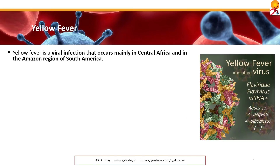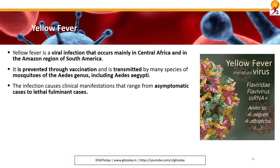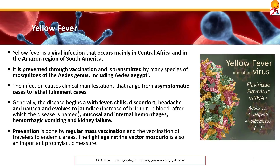Yellow fever is a viral infection that occurs mainly in Central Africa and in the Amazon region of South America. It is prevented through vaccination and is transmitted by many species of mosquitoes of the Aedes genus, including Aedes aegypti. The infection causes clinical manifestations ranging from asymptomatic cases to lethal fulminant cases. Generally, it begins with fever, chills, discomfort, headache and nausea, evolves to jaundice, then mucosal and internal hemorrhages, hemorrhagic vomiting and kidney failure. Prevention is done by mass vaccination and vaccinating travelers going to endemic areas, and the fight against vector mosquitoes is also an important prophylactic measure.